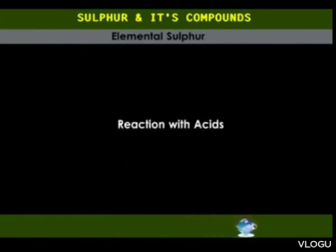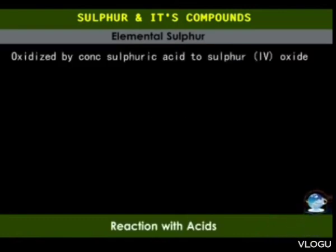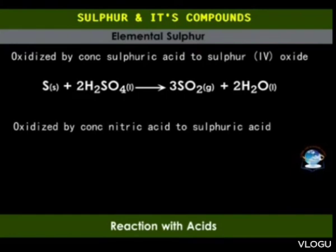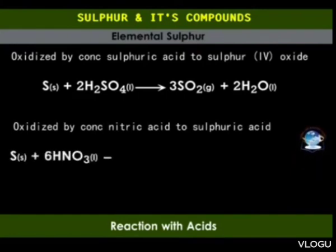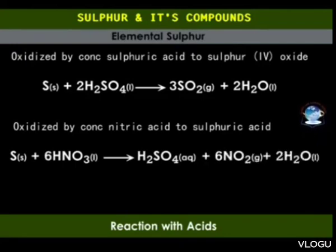Sulfur does not react with dilute acids. However, concentrated sulfuric acid oxidizes sulfur to sulfur dioxide. Concentrated nitric acid oxidizes sulfur to sulfuric acid and is itself reduced to nitrogen dioxide.